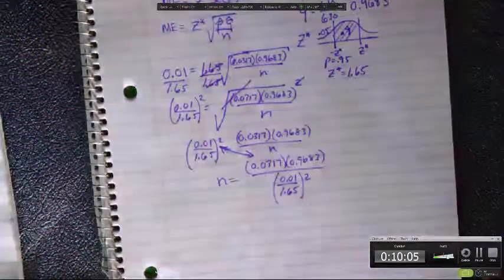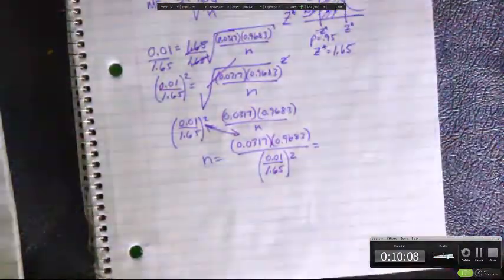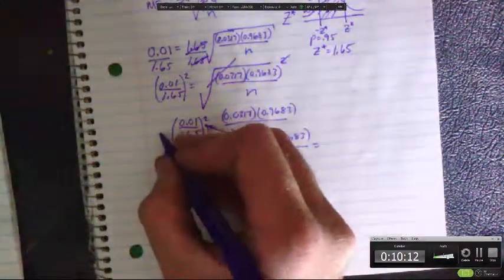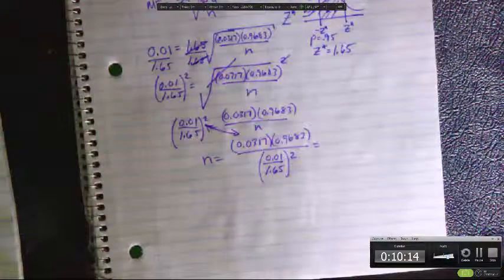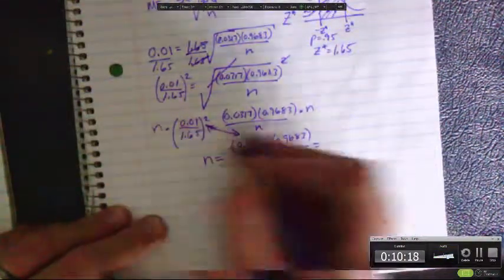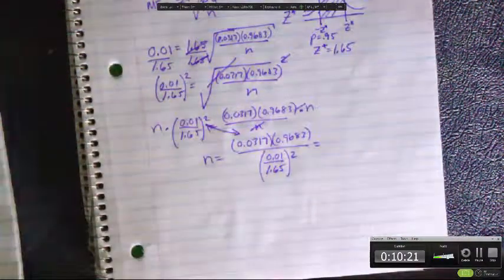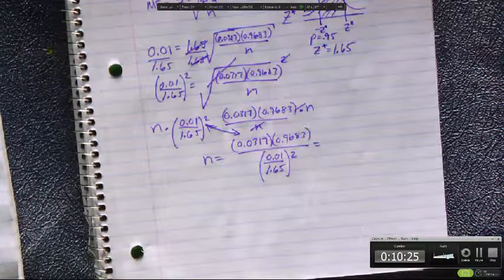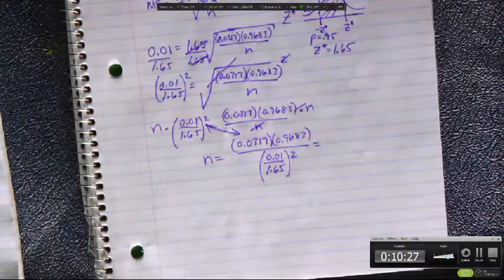Giving us n equals 0.0317 times 0.9683 over the margin of error divided by the z critical, squared. It's always going to be the same two steps. How do you get n off the bottom? Times it over. How do you get this away from n? Divide it over. It's always the same two steps. Once you get there, you just switch it.